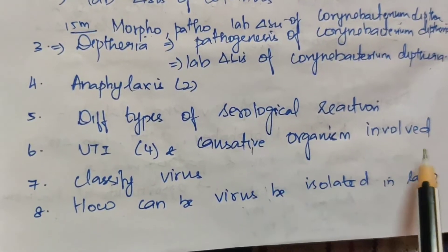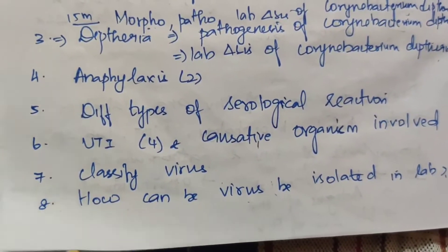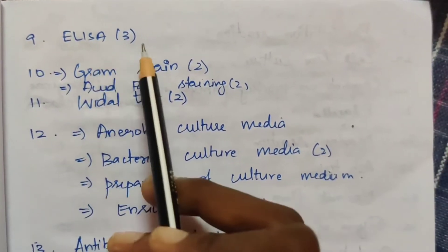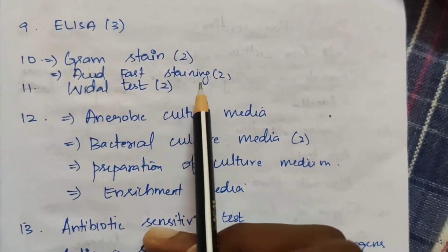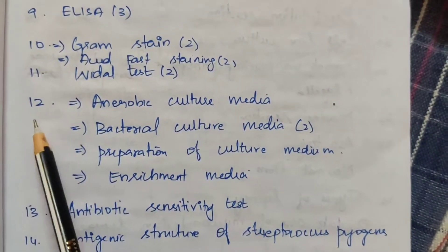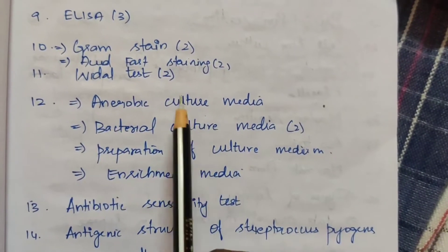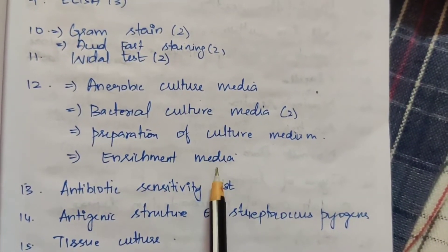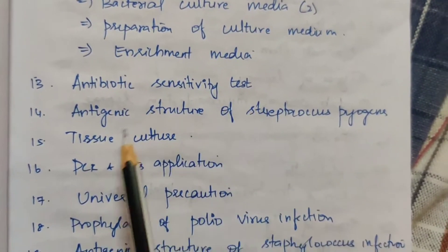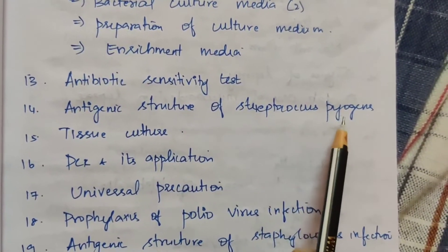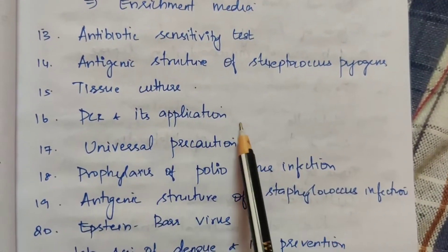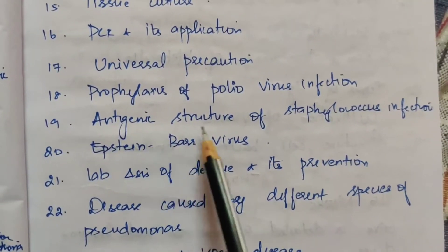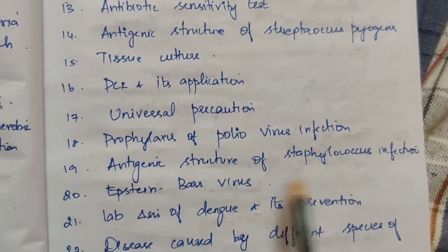The seventh 5-mark topic: classify virus. The eighth: how can viruses be isolated in a lab? The ninth: ELISA — appeared 3 times. The tenth: Gram stain appeared 2 times and acid-fast staining appeared 2 times. The eleventh: viral tests — 2 times. The twelfth: anaerobic culture media. Culture media related topics include bacterial culture media — 2 times, preparation of culture medium, enrichment media, antibiotic sensitivity test, antigenic structure of Streptococcus pyogenes, tissue culture, and PCR and its application.